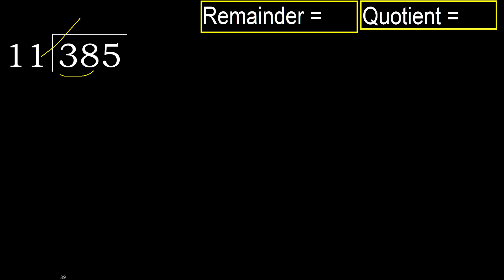11 multiplied by which number is nearest to 38 but not greater? 11 multiplied by 4 is 44, which is greater. Multiplied by 3 is 33, which is not greater — ok. 38 minus 33 is 5. Next.